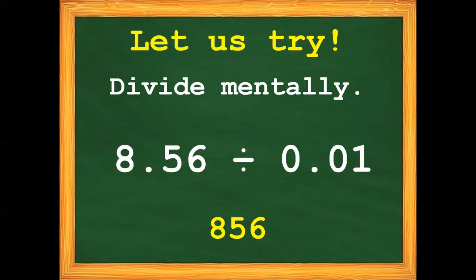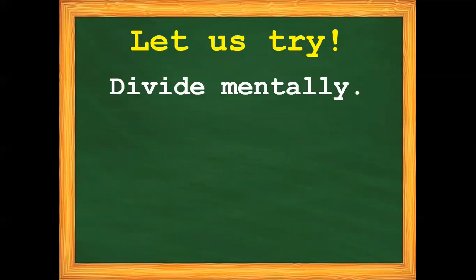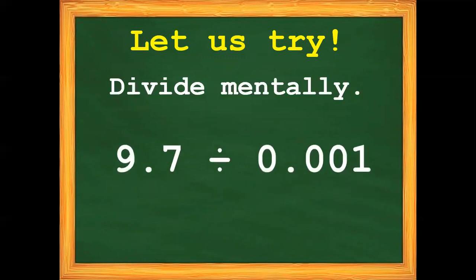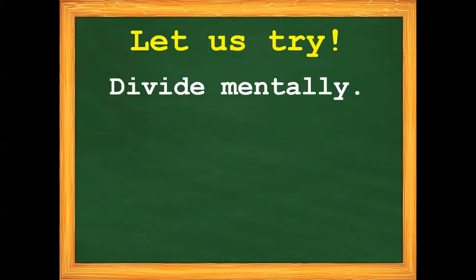Let's proceed with our second practice exercise. Divide mentally: 9-and-7-tenths divided by one-thousandth. Take a moment to solve it. Let's proceed with our last example.